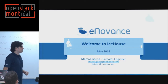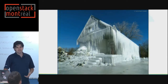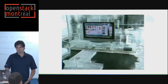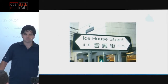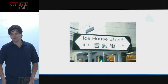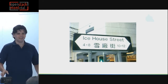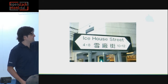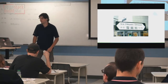Ice House is the keyword of this OpenStack release. The name comes from when developers last met all together in Hong Kong, and they found a street named Ice House — words they could actually understand, unlike Chinese. So they chose it as the name for the next OpenStack release.